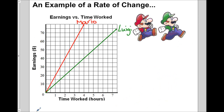We're going to start with a quick example. We have a graph of earnings versus time worked for Mario and his brother Luigi. These two guys are plumbers — that's why they go down those green pipes. So maybe these are their earnings through their plumbing business. Let's look at Mario's red graph. His graph starts at zero, so when he doesn't work, he doesn't earn any money, which is true of most jobs.